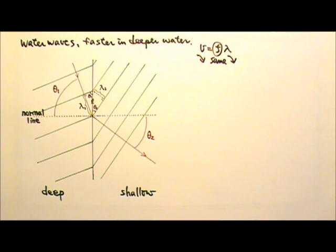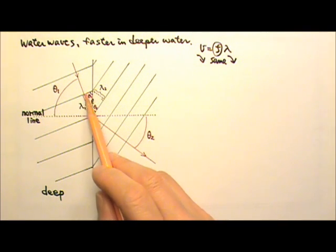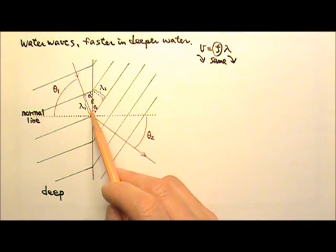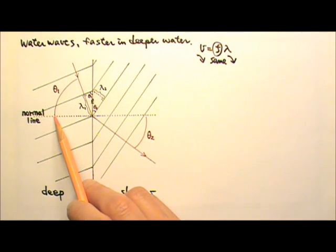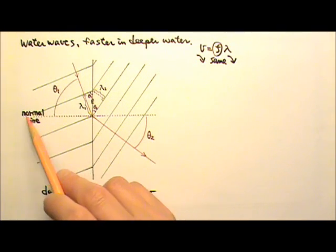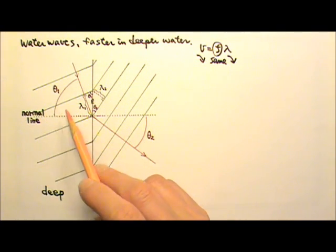Now let's derive the law of refraction equation. We will be focusing on these two right triangles. This angle here is theta 1, the angle of incidence, the angle between the incident ray and the normal line.